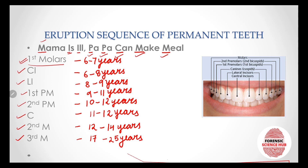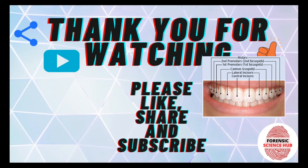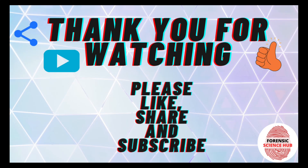So this is the eruption sequence of the primary teeth and the permanent teeth. I hope you understood everything. Thank you for watching.